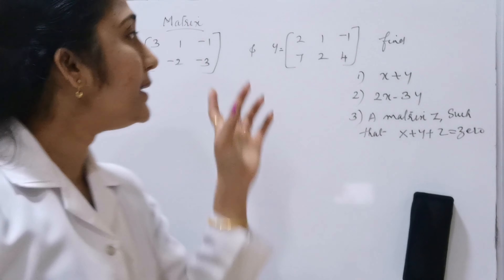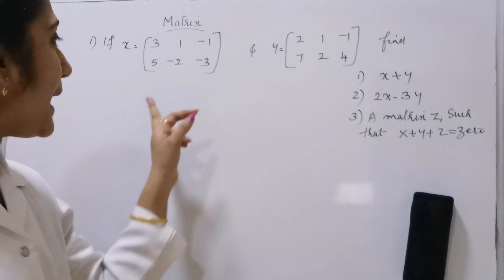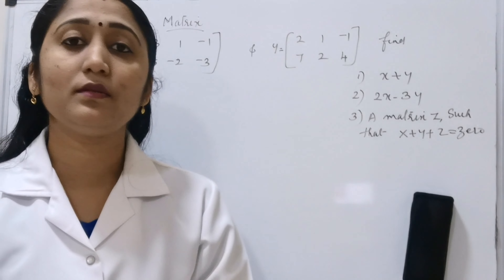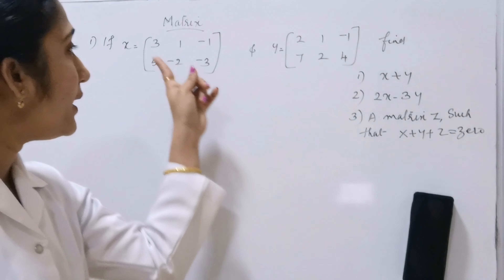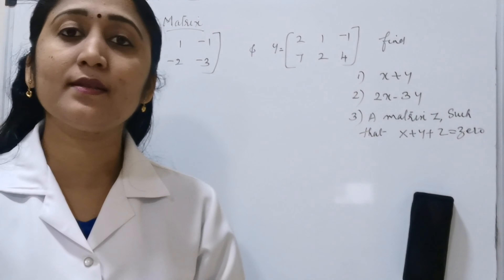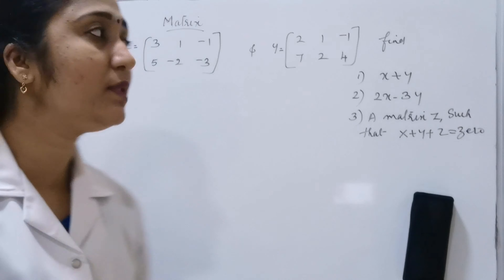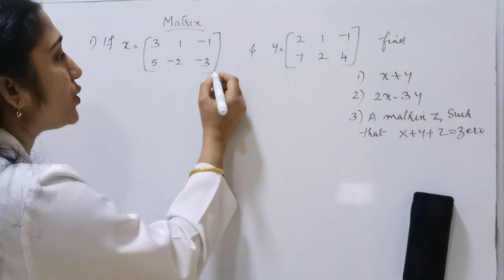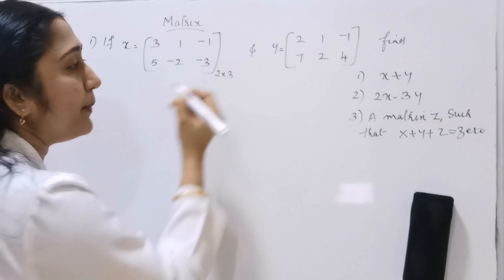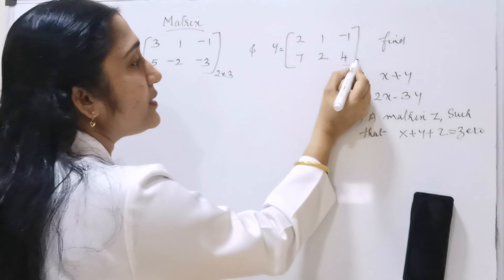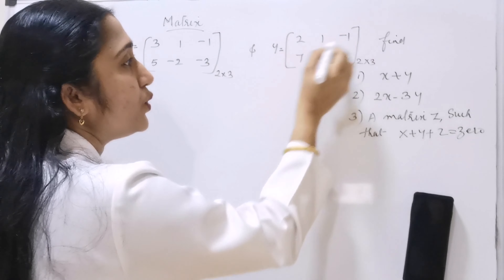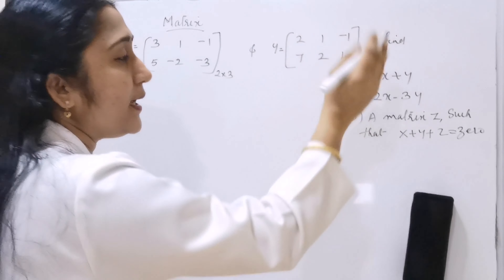Let us see — the order of matrix X is 2 rows and 3 columns, that means it is a 2 by 3 matrix. Same way, matrix Y is also a 2 by 3 matrix — 2 rows and 3 columns.